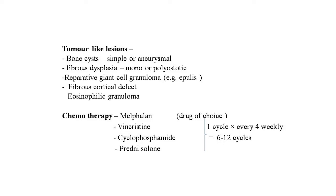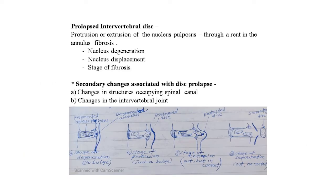Chemotherapy for bone tumors uses melphalan as the drug of choice, along with vincristine, prednisolone, and cyclophosphamide. One cycle is given every four weeks, and six to twelve cycles should be repeated.